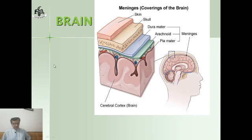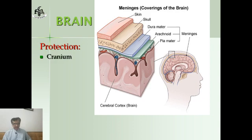The brain is present in a casing in the skull called the cranium, which provides protection to the brain. Beneath the cranium, further protection is provided by membranes called meninges. You can see in this diagram the dura mater, pia mater, and arachnoid spaces. These membranes are called meninges and they provide protection to the brain.